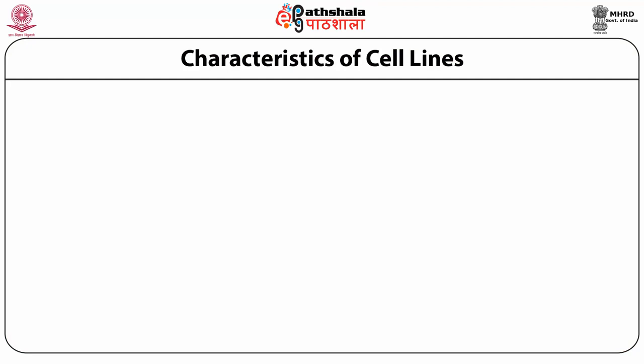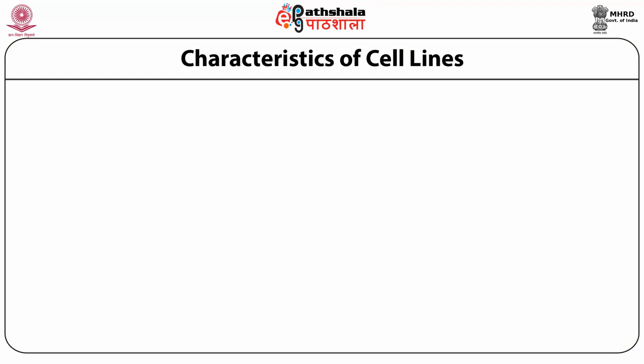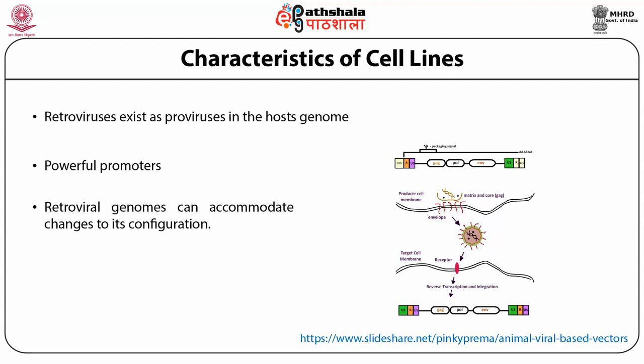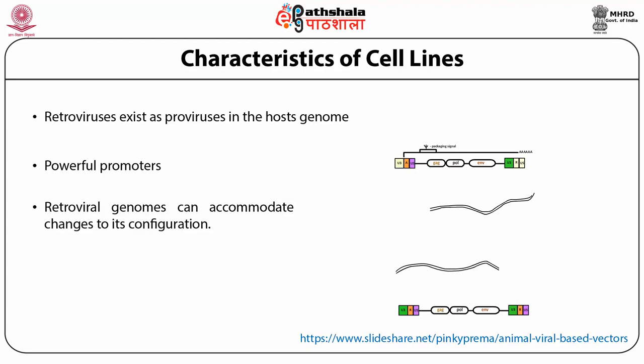Among different viral vectors, retroviruses are very important. Their major characteristics are that they exist as a provirus in the host genome, they have a very powerful promoter, and retrovirus genomes can accommodate changes to their configuration. Because of integration, they can become part of the host genome. HIV is a very good example of this virus causing infection in human beings.